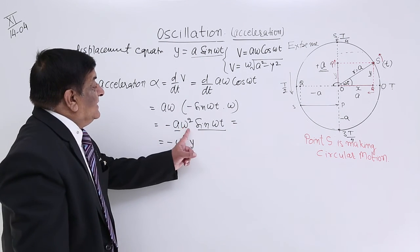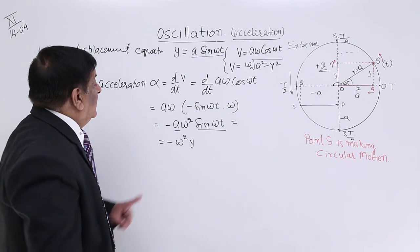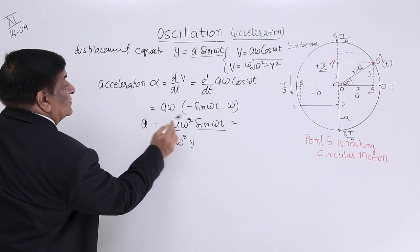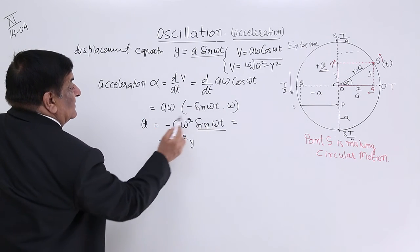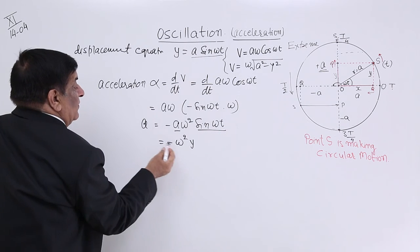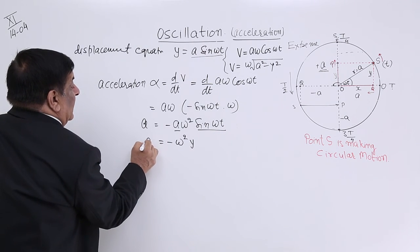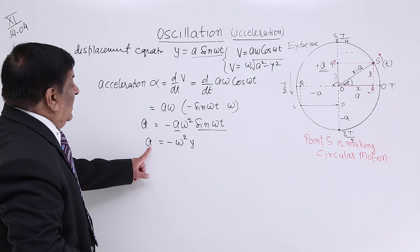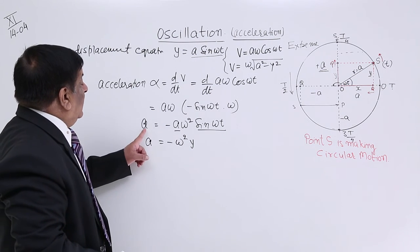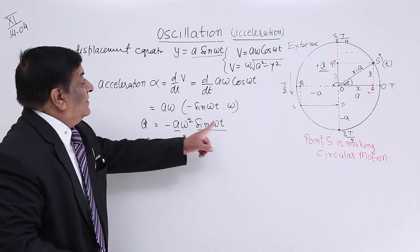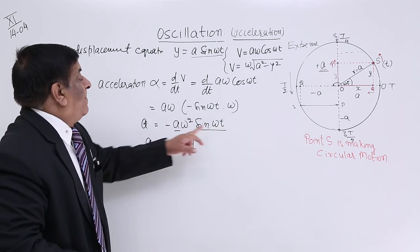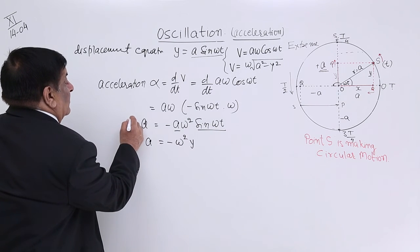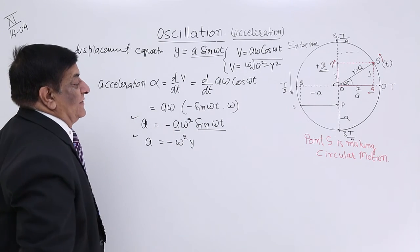So we have two acceleration equations: one in terms of t, which is α = −aω² sin(ωt), and one in terms of displacement y, which is α = −ω²y. These are the two equations we have for acceleration.